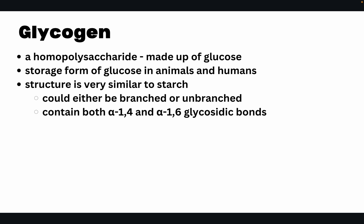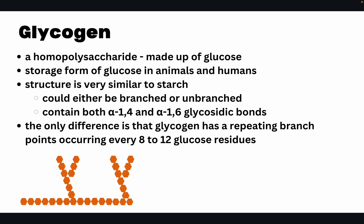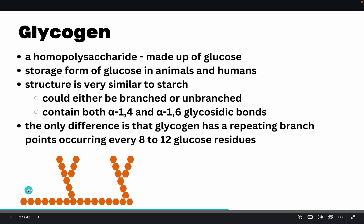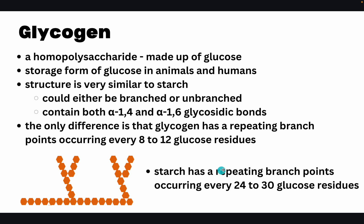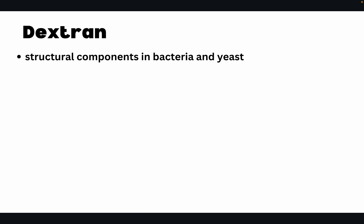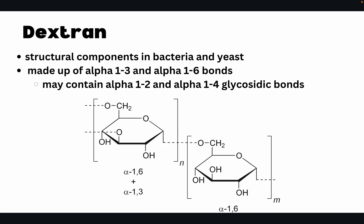Glycogen is a homopolysaccharide made up of glucose — the storage form of glucose in animals and humans. Its structure is similar to starch with alpha-1,4 and alpha-1,6-glycosidic bonds, but glycogen has branching points every 8 to 12 glucose residues, compared to amylopectin which branches every 24 to 30 residues. Dextran is a polysaccharide serving as structural components in bacteria and yeast, made up of alpha-1,3 and alpha-1,6 bonds, and can also contain alpha-1,2 and alpha-1,4 glycosidic bonds.